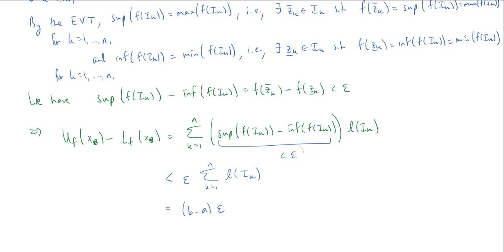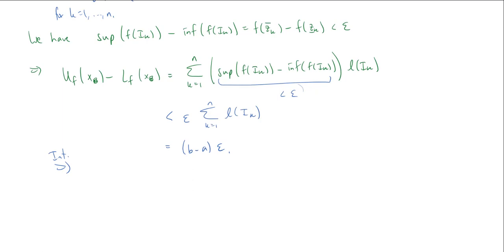So by the integrability criterion, f is Darboux integrable — here k equals b minus a. That's the proof; not too bad! We have established that if you have a continuous function, then it is Darboux integrable. In the next video, we'll start building up a more general situation: what if we have a discontinuity, or maybe more than one discontinuity? Is it still possible that our function is integrable? We'll see you next time.